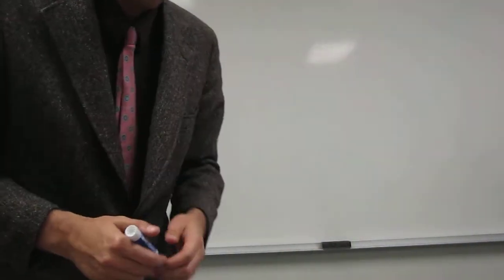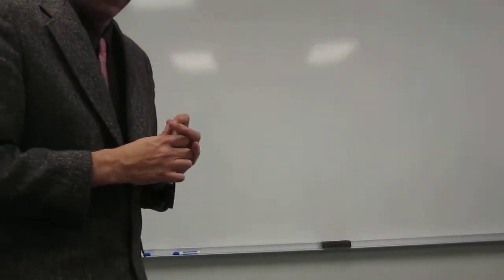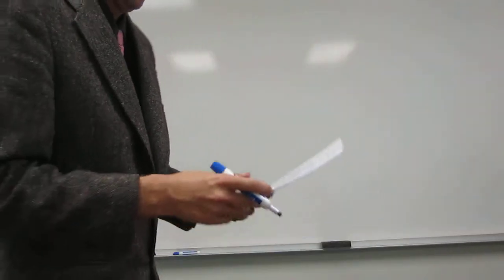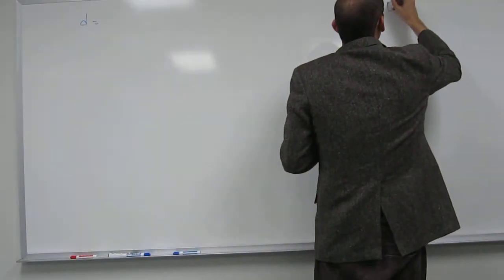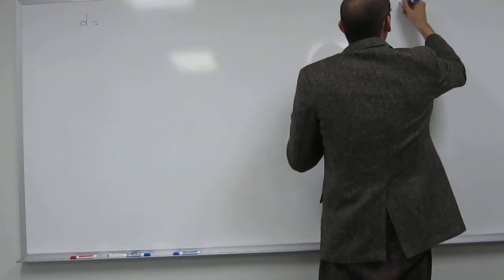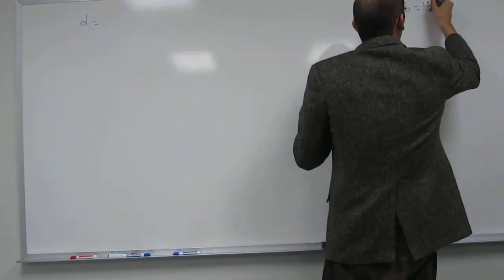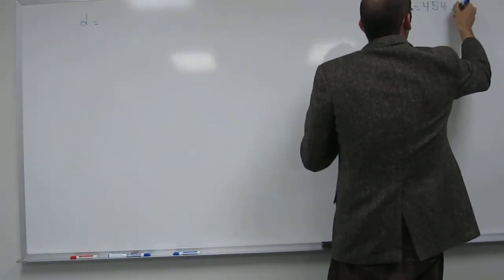And then they give you a conversion factor that one pound equals 454 grams. So, let's write that conversion factor. 1.0 pound equals 454 grams.